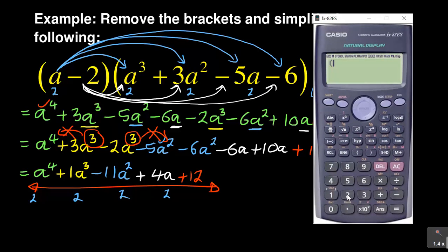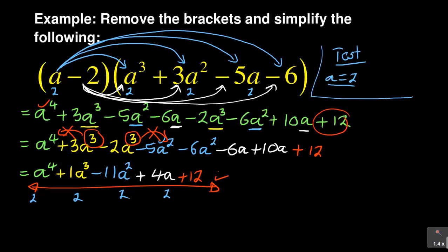For example, this would be (2-2)(2³ + 3×2² - 5×2 - 6). If I do that, I'm getting 0. I do the same thing with the final answer: 2⁴ + 1×2³ - 11×2² + 4×2 + 12. If I say equal to, it's also giving me 0. Therefore it means my simplification is correct. That is how I test my answers.